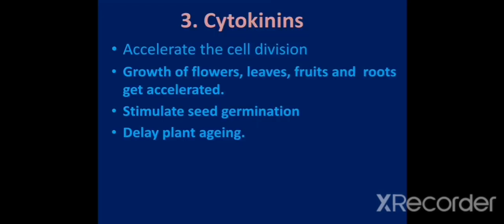Third plant growth substance we are going to talk is cytokinins. It accelerates the cell division. Growth of flowers, leaves, fruits and roots get accelerated by cytokinin. It stimulates seed germination and delays plant aging.